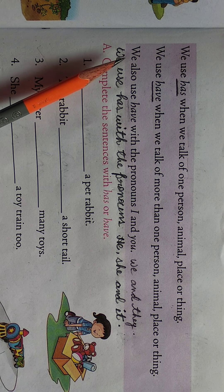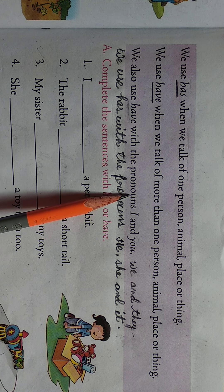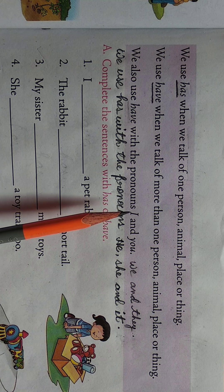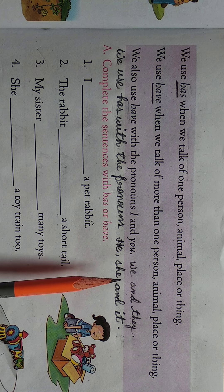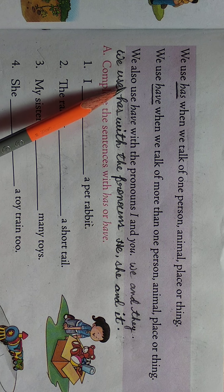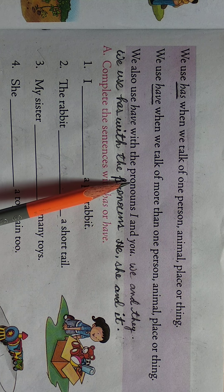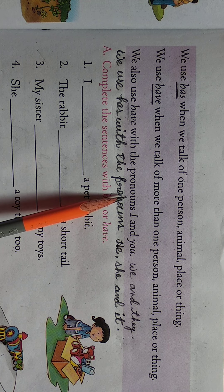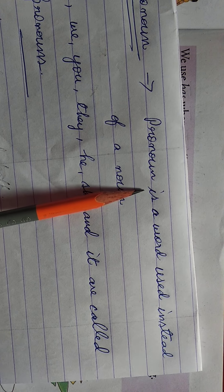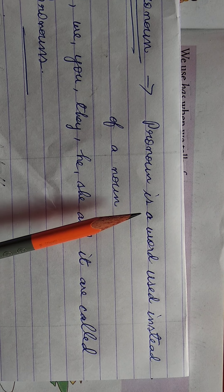Okay. Next, the third rule is: we also use 'have' with the pronouns I and you, we and they. यहाँ और एक चीज़ बताया गया है — we also use have with the pronouns. Pronoun is a word used instead of a noun. Name की जगह में use किया जाता है, उस word को pronoun कहते हैं.